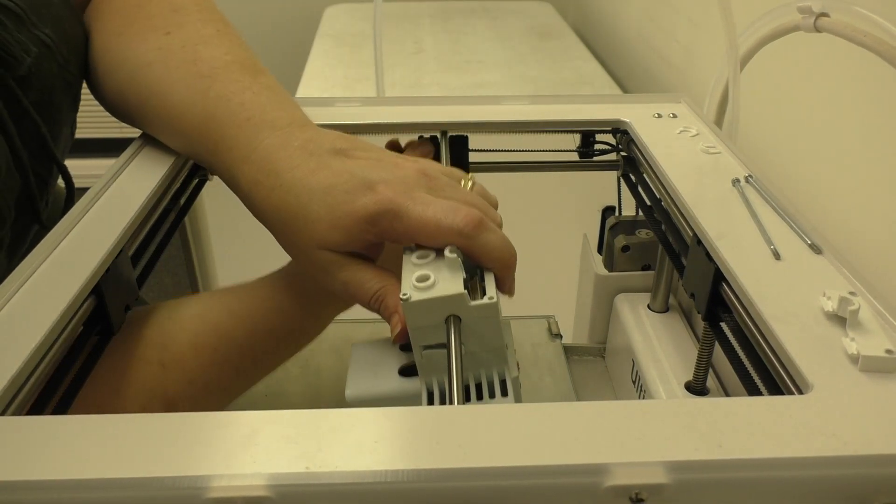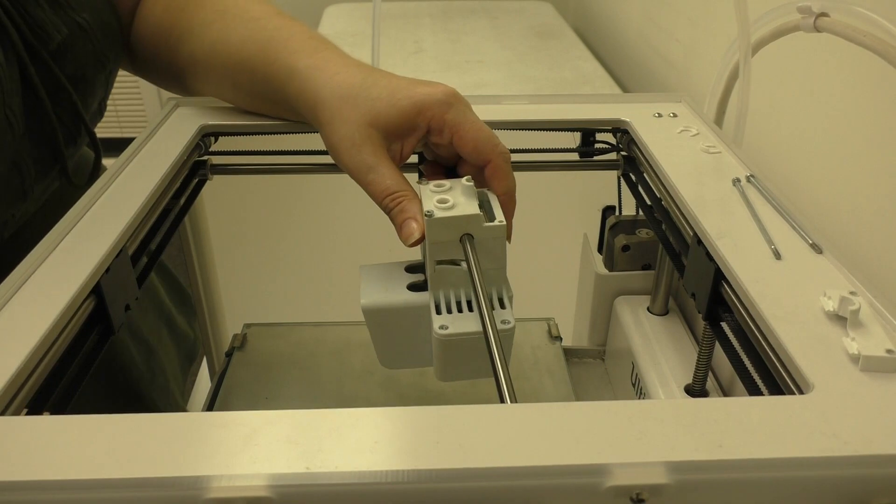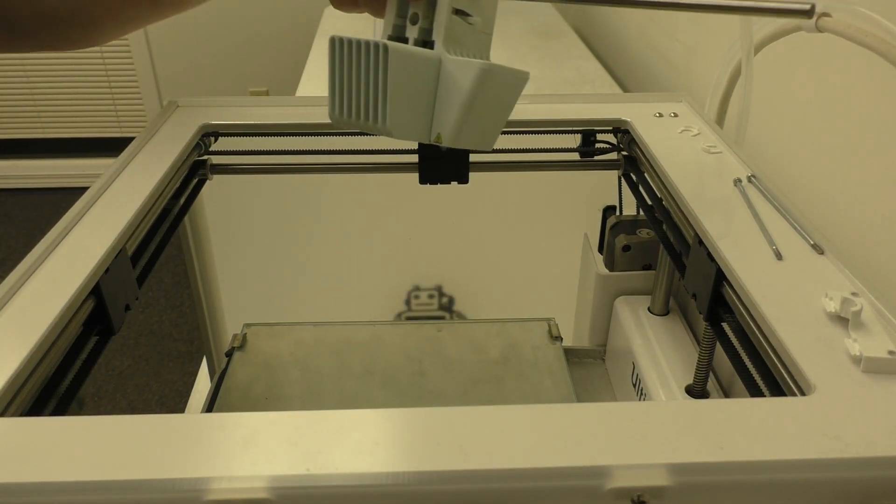Next, you're going to do the same process on the left and right sliding blocks. And go ahead and turn the print head slightly diagonal to pull it up.